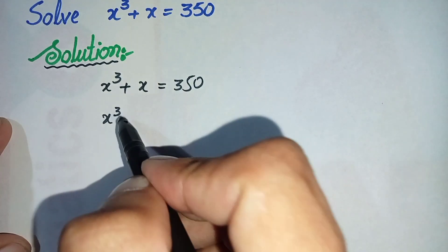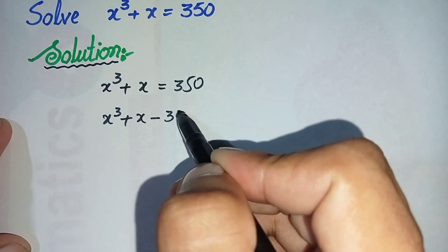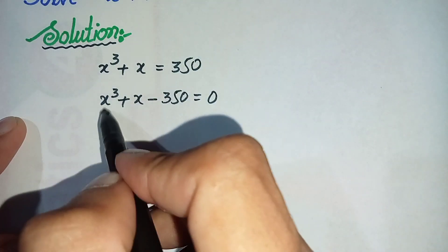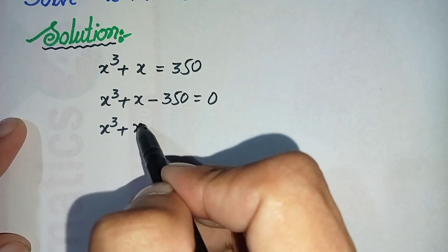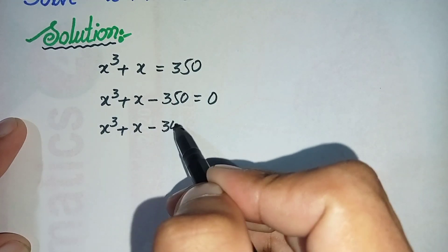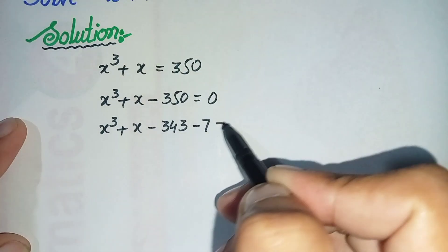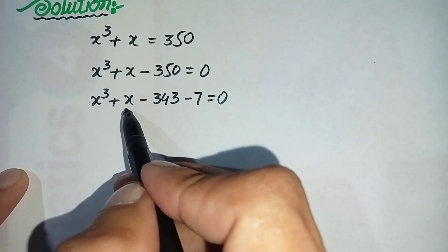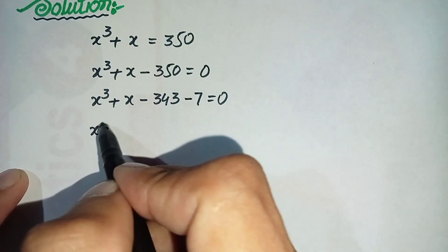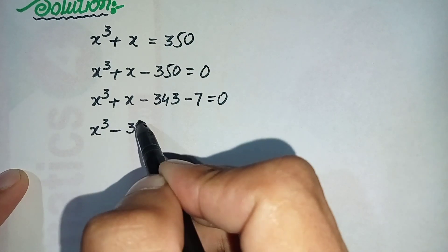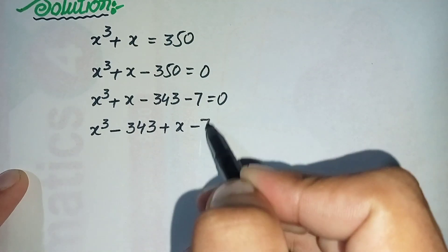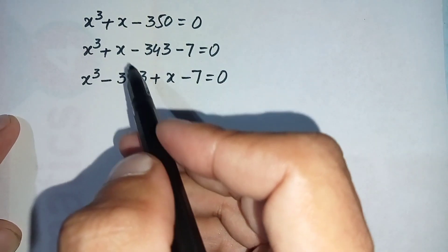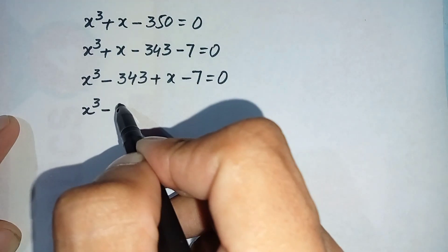In the next step we will shift the constant term to the left hand side, so this equation will become x³ + x - 350 = 0. Next we will factorize 350: we can write this as 343 + 7, which gives us -350 back. We will rearrange these terms so this equation becomes x³ - 343 + x - 7 = 0.